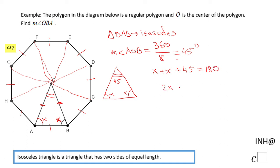So 2X plus 45 equals 180. The next step will be to subtract 45, and we have 2X equals 135. We can divide by 2, and we have X equals 67.5. But don't forget, this 67.5, this X, is nothing else than the measure of angle OBA.